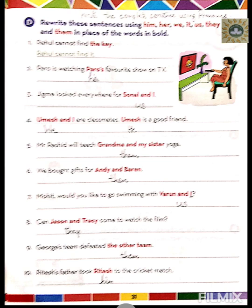Exercise D: Rewrite these sentences using him, her, we, it, us, they, and them in place of the words in bold. Number one: Rahul cannot find the key. The key is a non-living thing, so we use 'it.' Sentence: Rahul cannot find it. Number two: Paro is watching Paro's favourite show on TV. Since Paro is a girl, we use 'her.' Sentence: Paro is watching her favourite show on TV.